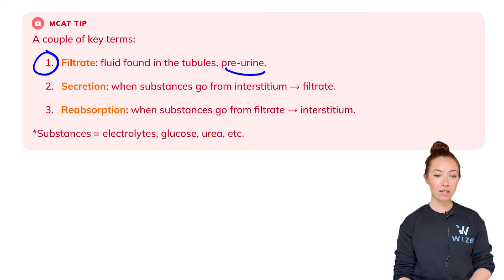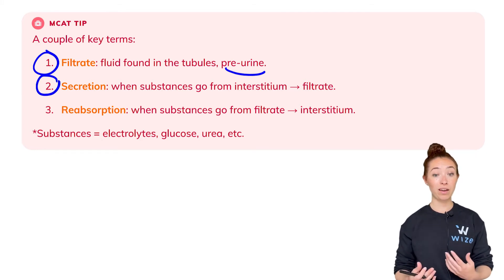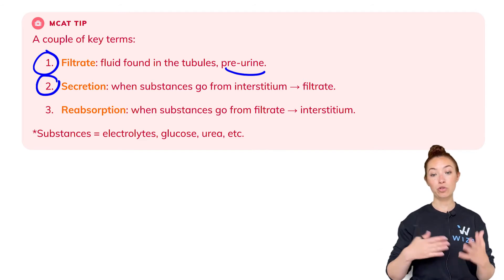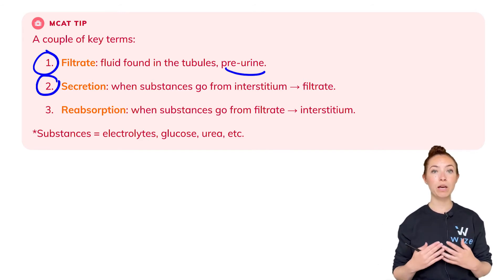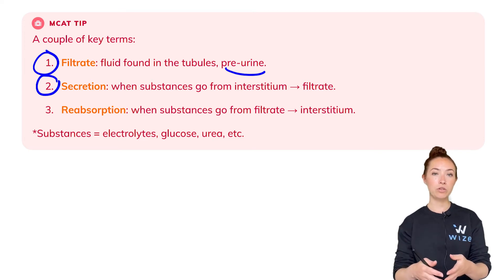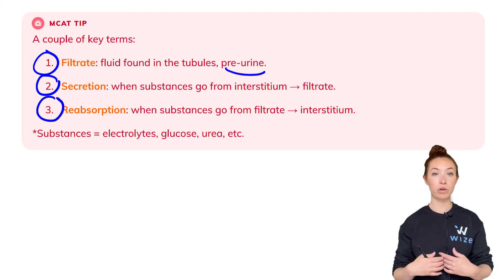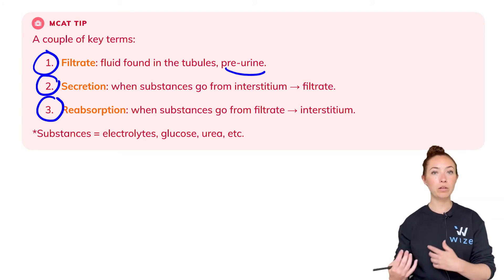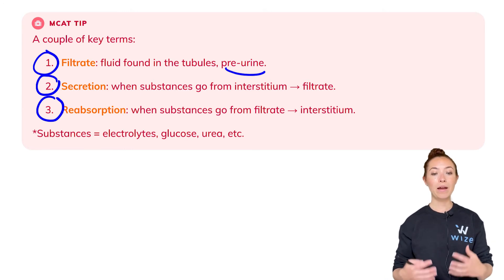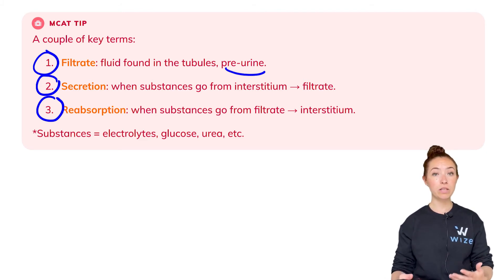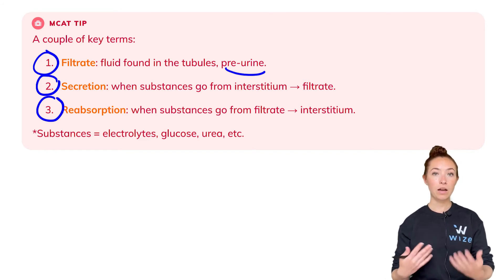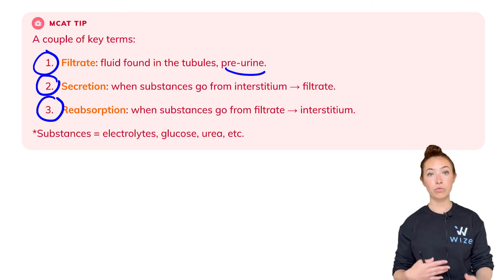The second key term is secretion. When things go from the interstitium to the filtrate, we call that secretion — we're taking things from the body and putting them into the filtrate. The opposite is reabsorption: when substances go from the filtrate back to the interstitium, eventually ending up in the bloodstream or remaining in the interstitium. Things taken out of the filtrate because they're needed elsewhere — that's reabsorption. The substances involved include electrolytes like ions, glucose, urea, and water.